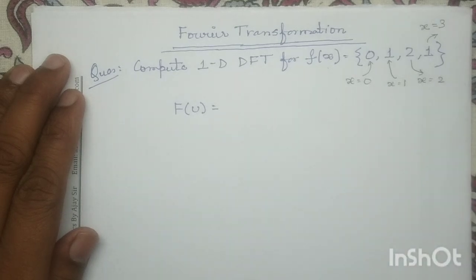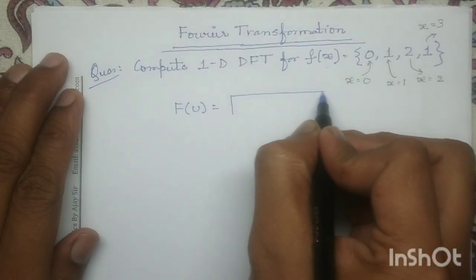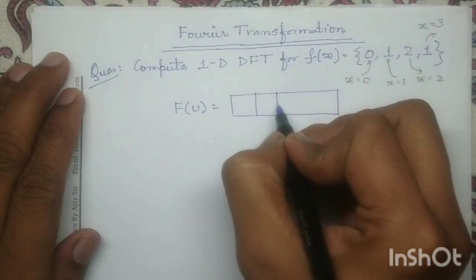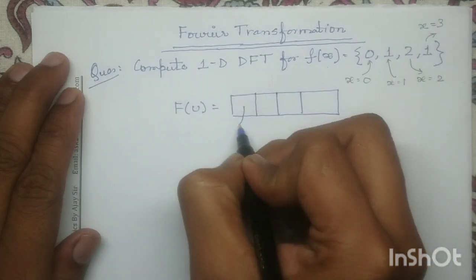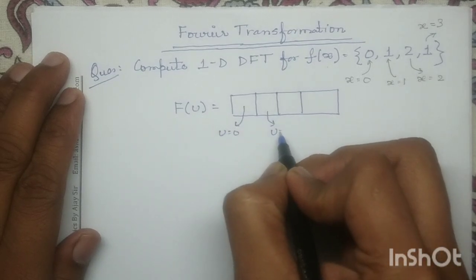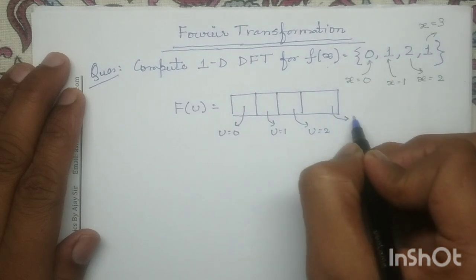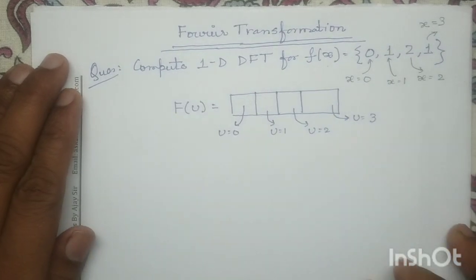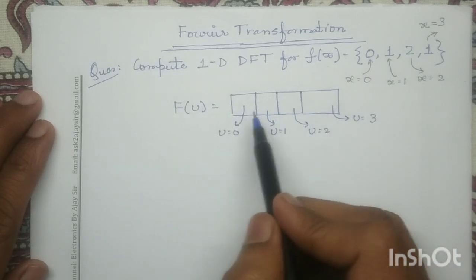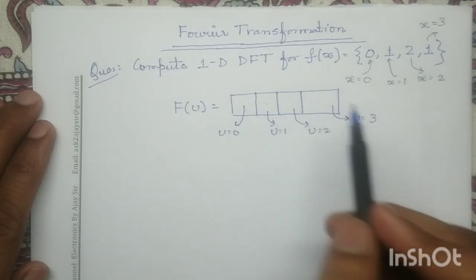In the similar way, F(u) also consists of four points: this one is u=0, this one is u=1, this one is u=2, and this one is u=3. So we have to compute these four numbers: F(u) for u=0, u=1, u=2, and u=3.